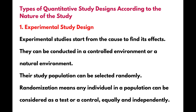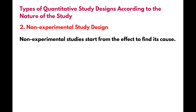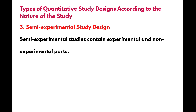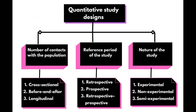Experimental studies start from the cause to find its effects. They can be conducted in a controlled or natural environment, and the study population can be selected randomly. Randomization means any individual in a population can be considered as a test or a control equally and independently. Non-experimental studies start from the effect to find its cause. Semi-experimental studies contain both experimental and non-experimental elements.